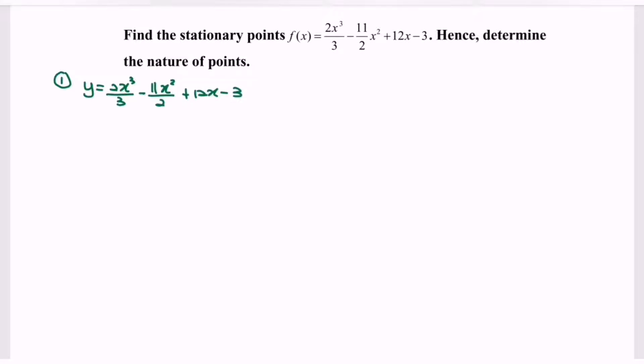Step number two, find the first derivative, where we have y prime equals 2x square minus 11x plus 12. Next, my suggestion would be find the second derivative as well for this part. So where we will have y double prime equals 4x minus 11.